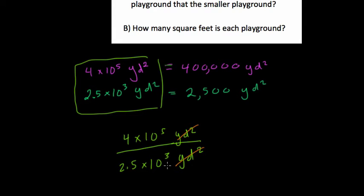Well, the yards cancel out. Anything divided by itself is 1. 10 to the 5th divided by 10 to the 3rd, subtract the exponents, that's 10 to the 2nd. And 4 over 2.5, what's that?